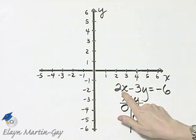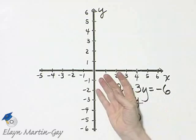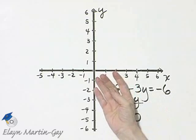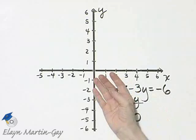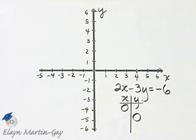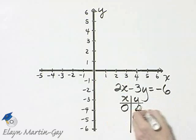If I let x be zero in this equation, I would then be solving -3y equals -6, divide both sides by -3, and y would then be 2.